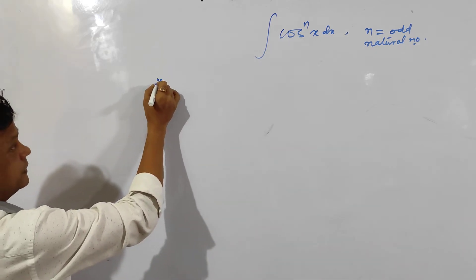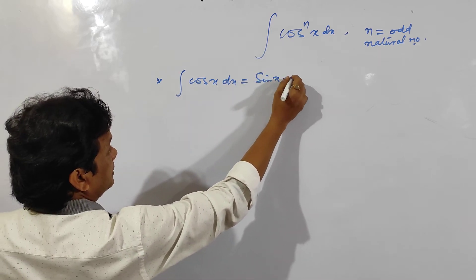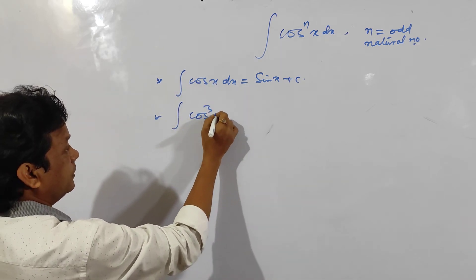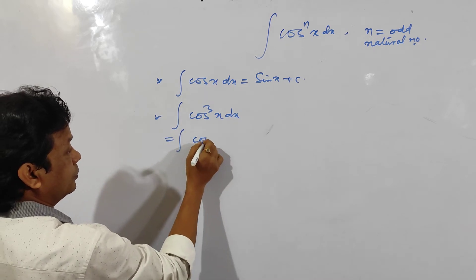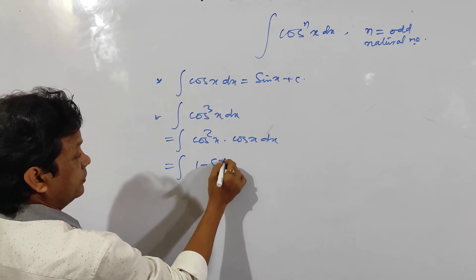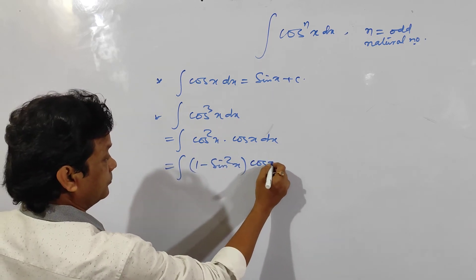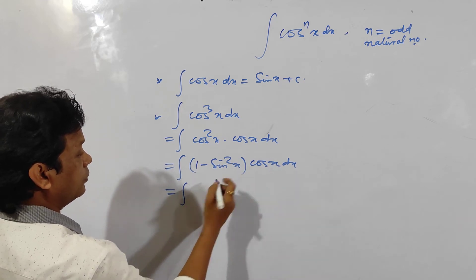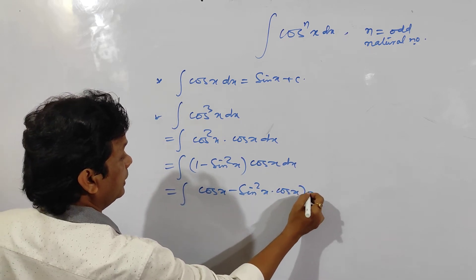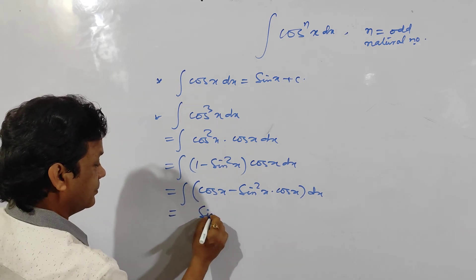Since n is an odd natural number, let us first see: the integration of cosec x is sin x + c, and the power 1 is odd. For cos cube x dx, I can write cos square x into cosec x into dx. Now cos square x is 1 minus sin square x, because the derivative of sin x is cos x. So I am expressing cos square x in terms of sin x. Then multiplying, 1 into cosec x is cosec x, and sin square x into cosec x into dx.